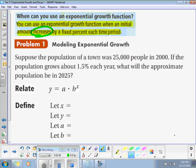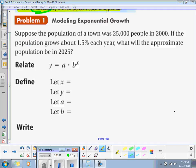Problem one says modeling exponential growth. Suppose the population of a town was 25,000 people in 2000. If the population grows about 1.5% each year, what will the approximate population be in 2025? Now, we need to figure out what our variable is. We need to define our variables.